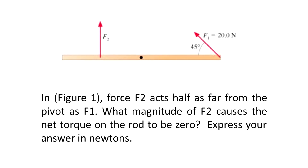Hello guys, today we are going to perform a net torque analysis on the rod shown here in figure 1. Force 2 acts half as far from the pivot as F1. What magnitude of F2 causes the net torque on the rod to be zero? Express your answer in Newtons.